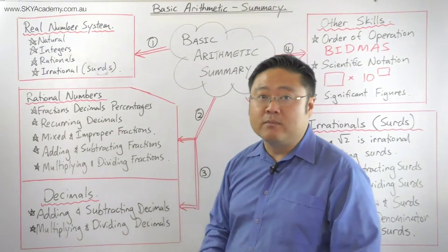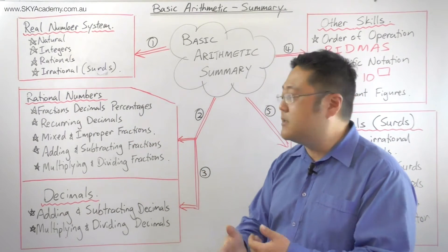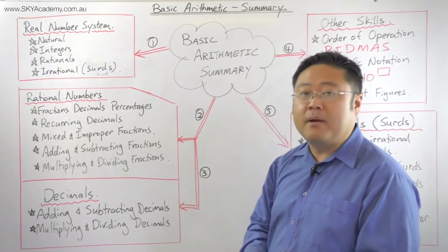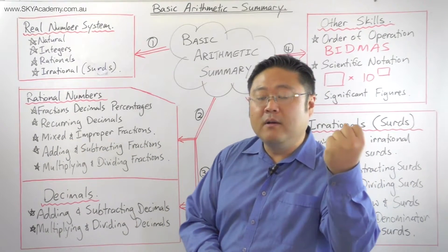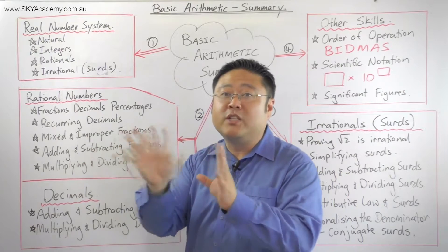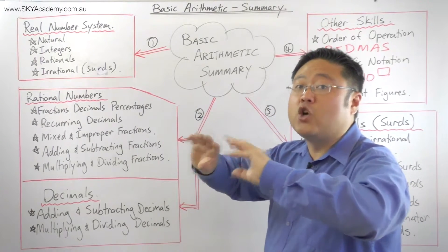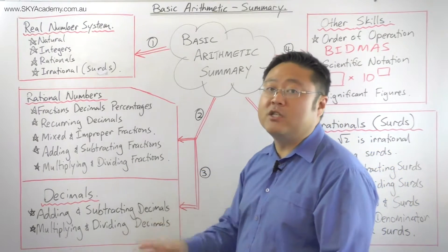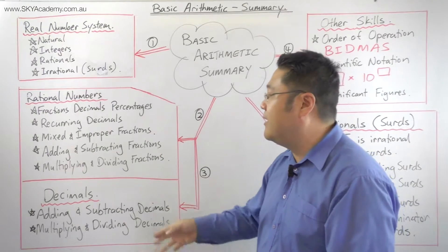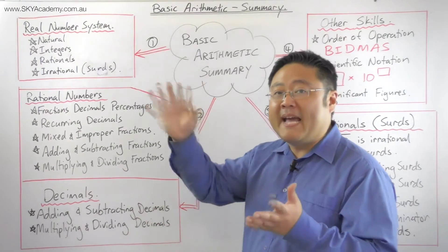We looked at recurring decimals and worked out how to convert them into fractions. We looked at fractions in general — mixed and improper fractions. An improper fraction is one where the numerator is bigger than the denominator; a mixed number is expressed as a whole number with a remaining fraction component. We learned to convert between both, and to add and subtract fractions by making the denominators common.